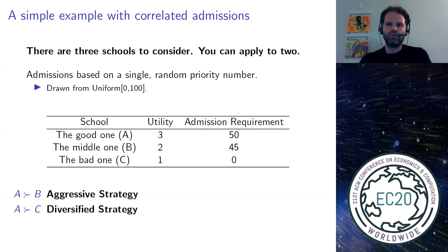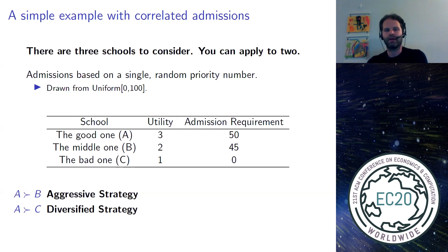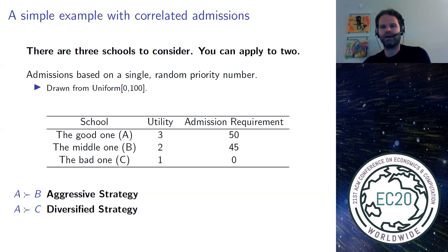To understand where correlation can emerge in school choice, a simple example can be useful. Imagine that there are three schools available, but you can only apply to two, maybe because these are the rules introduced by the school district. Admissions are going to be determined solely by a uniform random draw, but you don't know the realization of this draw when you need to apply — for example, a test score that you haven't taken yet or haven't received results for yet.